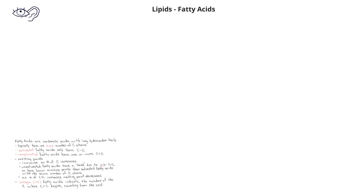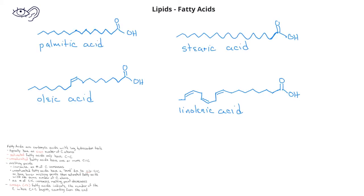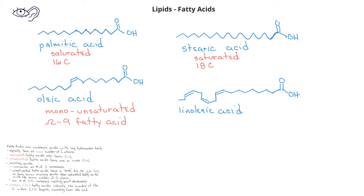Here are four examples of fatty acids. Palmitic acid is an unsaturated fatty acid with 16 carbons. Stearic acid is an unsaturated fatty acid with 18 carbons. Oleic acid is a monounsaturated fatty acid, and it's also an omega-9 unsaturated fatty acid because when counting from the CH3 end, we see that the double bond begins on the ninth carbon from that end. Like stearic acid, oleic acid has 18 carbons in its carbon chain.